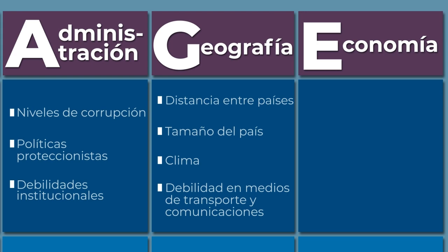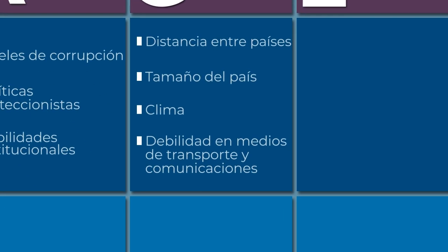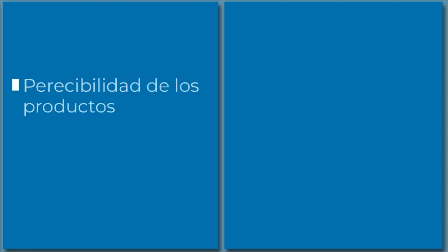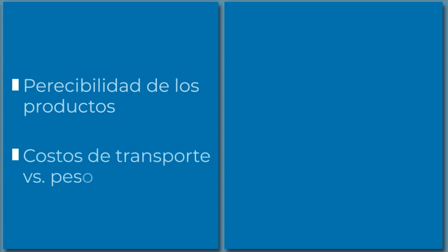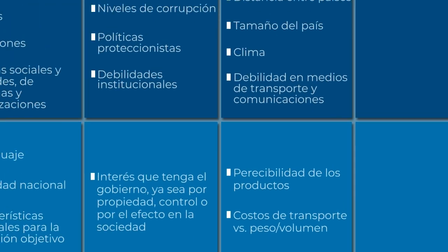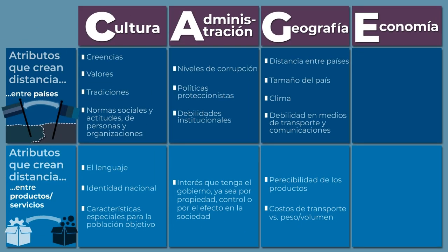Para analizar la industria propiamente dicha, debemos encontrar, por ejemplo, si los productos son perecederos por efecto del clima, si son pesados, si tienen volumen, si los medios de comunicación facilitan o dificultan el comercio y la relación comercial, incluso a nivel local. Todos esos componentes conforman lo que denominamos la geografía.